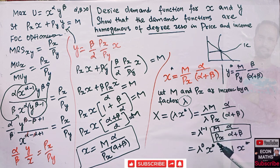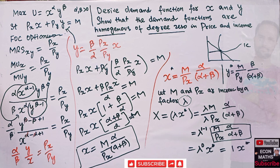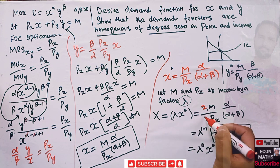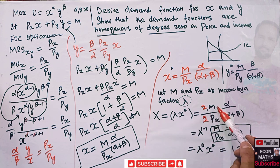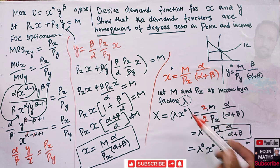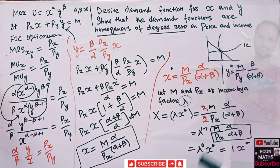When we multiplied income and price by a factor lambda, they cancelled out and we are left with the original demand function. This means when we double income and price, quantity demanded does not change. By homogeneity of degree zero in price and income, if lambda equals 2 — price doubles and income doubles — the twos cancel and we get the same demand function.